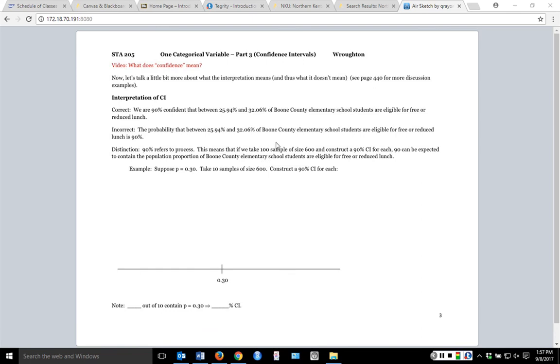But let's suppose that we each went out and got a sample. If we each constructed our confidence interval, we're going to get slightly different numbers because our P hats are going to be slightly different numbers. But if I could pretend for a moment that I actually knew what P was, and the only reason that I have to do this is for this understanding to make sense. So suppose that, in reality, 30% of all Boone County Elementary School students are eligible for free or reduced lunch.